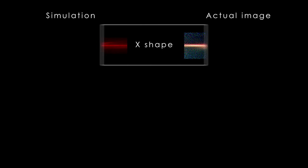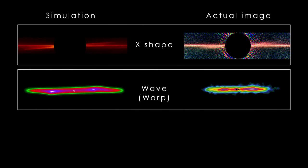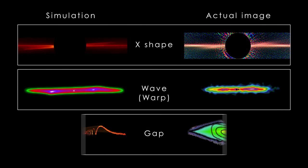The model painted one picture of Beta Pictoris that showed us the origin of the X pattern, the origin of the warp, and also a bunch of other details about the system. Our simulation is the first model that can capture the 3D structure of the disk, as well as the collisions that are occurring between the planetesimals in the disk.